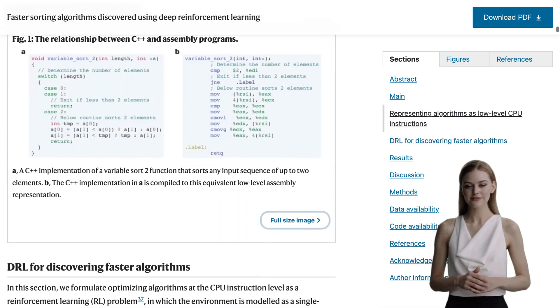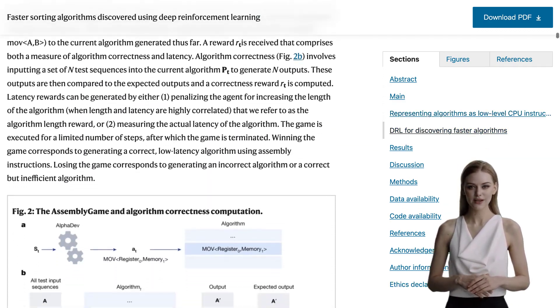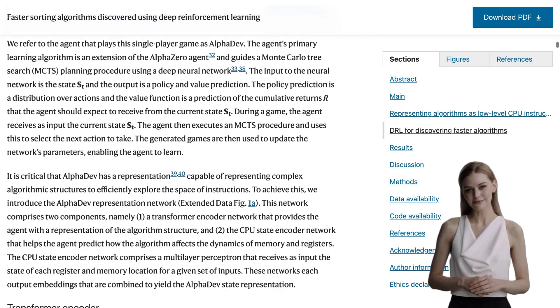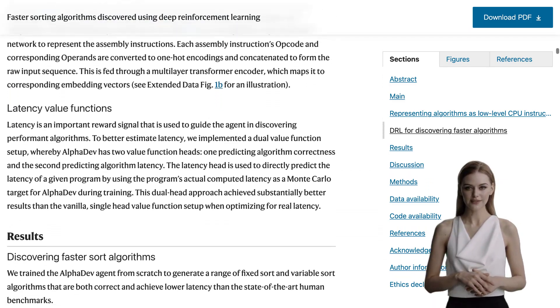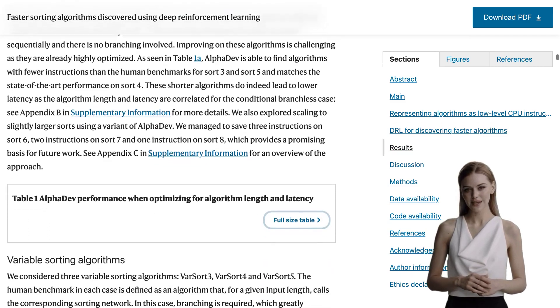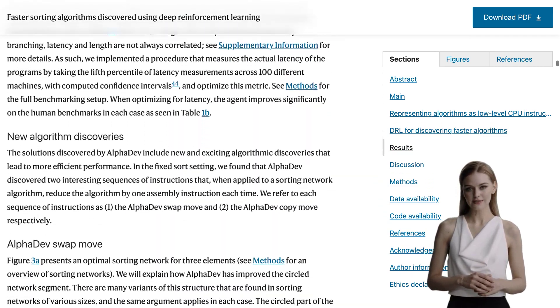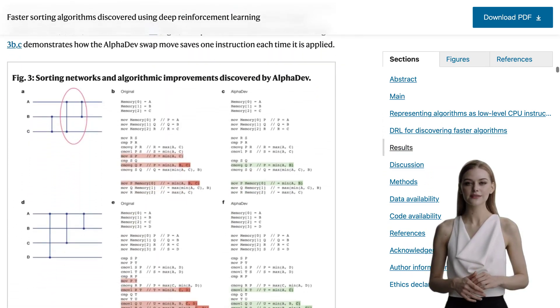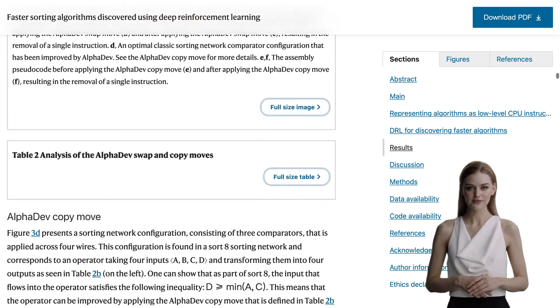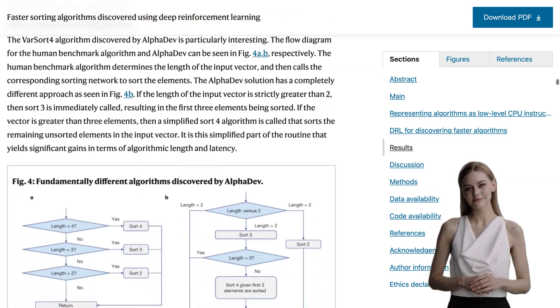By playing a single-player game called Assembly Game, AlphaDev was able to select low-level CPU instructions to create new and efficient sorting algorithms that outperformed the state-of-the-art human benchmarks. These newly discovered fixed and variable sort algorithms were not only more efficient but also completely novel.